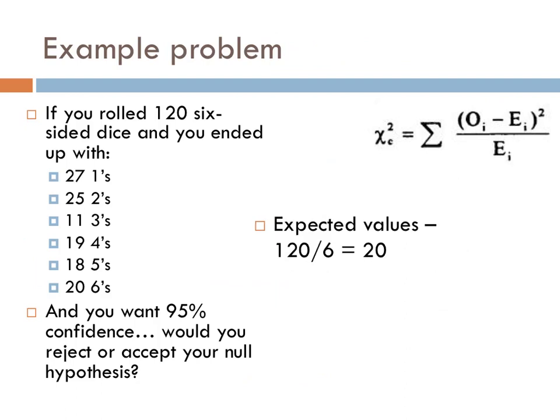Next, we'll determine what your expected values should be. Since there are 120 dice being rolled and there are six different sides on your dice, you would expect 120 divided by 6 or 20 rolls on each of the six different numbers. Our expected values for each of the different sides would therefore be 20.